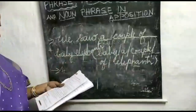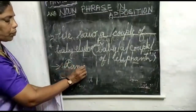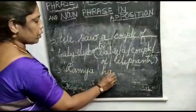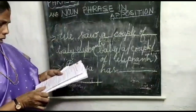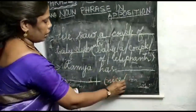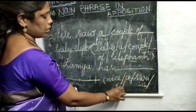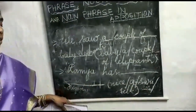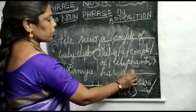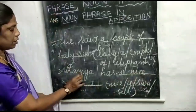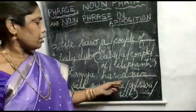We will see one more example. Ramya has — in bracket it was given: nice, a, sari, silk. Can you guess the answer according to the order I explained? The answer is: a nice silk sari. This is the order of the noun phrase.